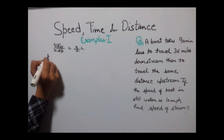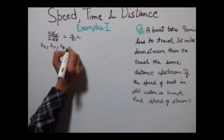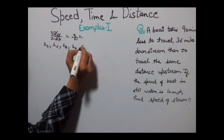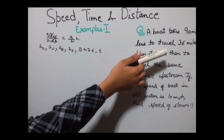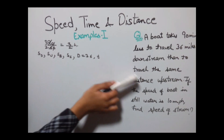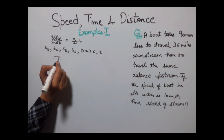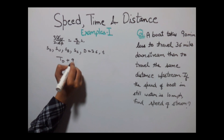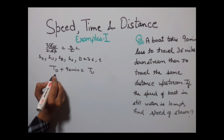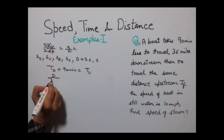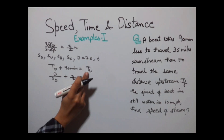Let SD = speed of downstream, SU = speed of upstream, SB = speed of boat, SS = speed of stream, D = 36 miles, and T = time taken. The boat takes 90 minutes less downstream than upstream, so time of downstream plus 90 minutes (i.e., 3/2 hours) equals time of upstream. Time of downstream equals distance divided by speed of downstream, plus 3/2 hours, which equals time of upstream.